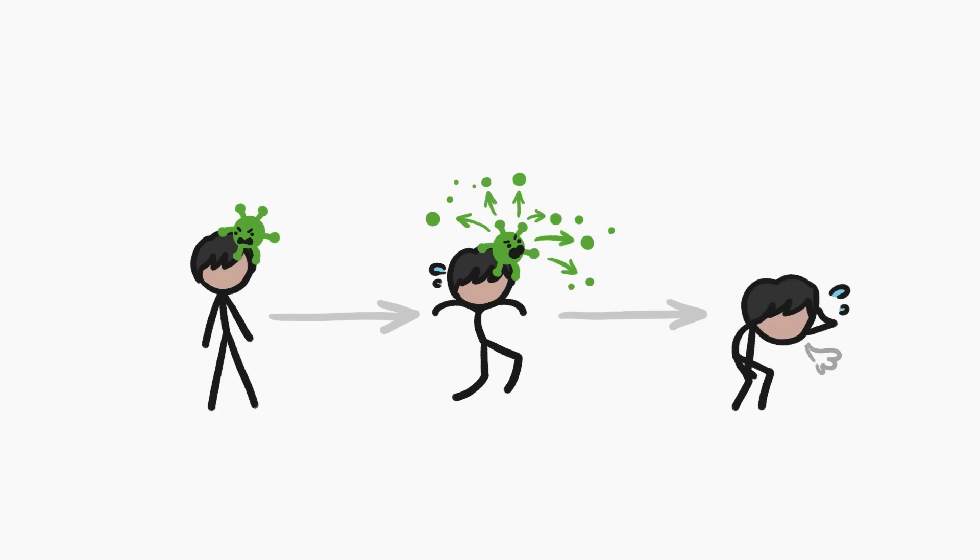When a person gets infected with a nasty germ, if it's contagious, like we learned from the COVID pandemic, they start spreading it to other people. Then, after a certain amount of time, they stop infecting others.